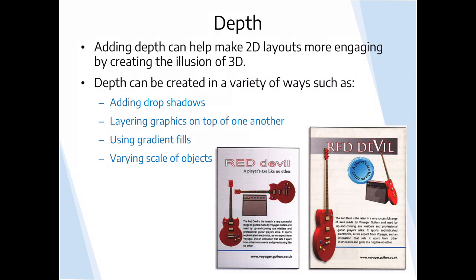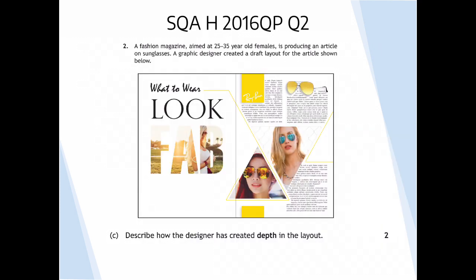By giving this impression of perspective, the larger object to the front looks far closer and the smaller object appears to go into the distance. Looking at another example from an SQA paper in 2016, the magazine layout is for Brae-Band sunglasses and makes really effective use of depth. The drop shadow has been applied to the yellow bar and to the sunglasses at the top of the page, casting onto the page and giving the impression that the object is at the front.